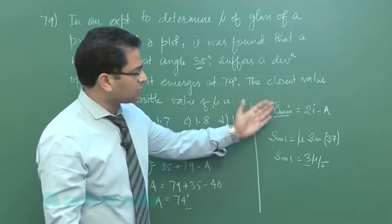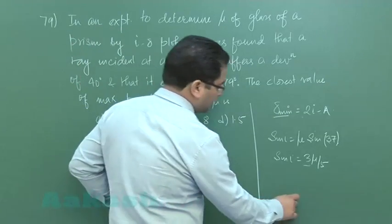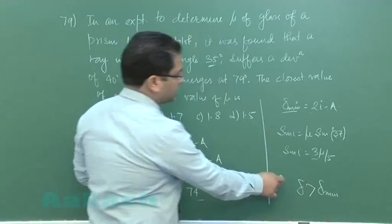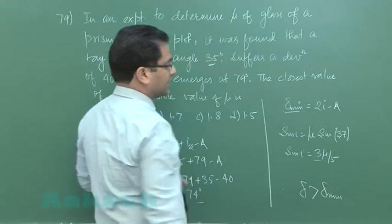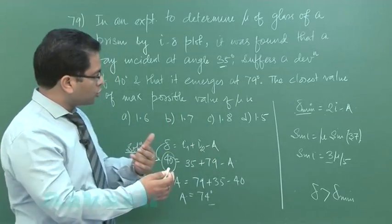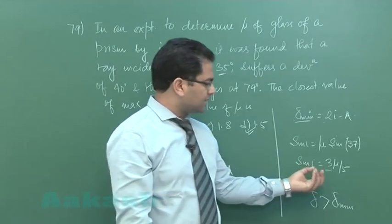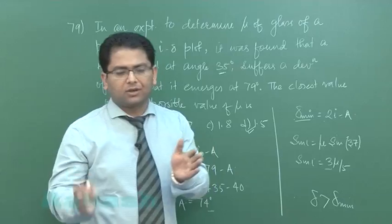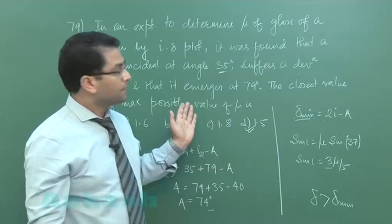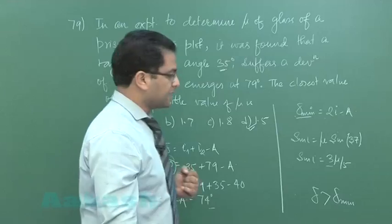Since the observed deviation of 40° must be greater than the minimum deviation, we apply the inequality δ > δ_min and solve. After a bit of trigonometric calculation, the result is very close to μ = 1.8. The answer closely matches one of the given options, completing question number 79. Now we'll move to question number 80.